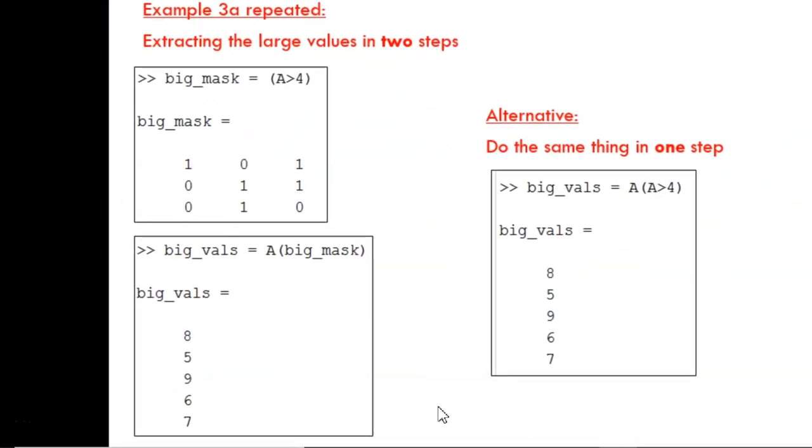Here, we see two ways of creating the list of big values. On the left is the way we already explored. On the right is the shortcut, with two commands combined into one. This command can be read as, extract the values of A where A is greater than four.